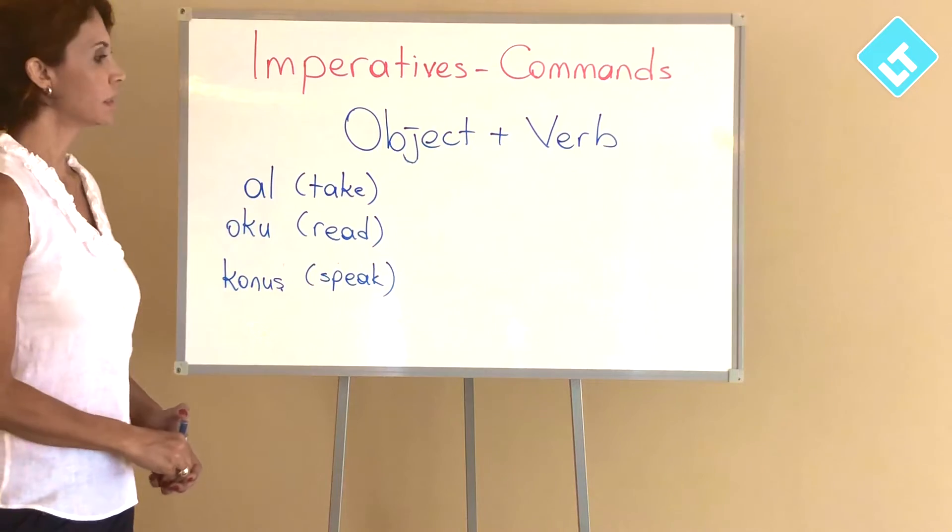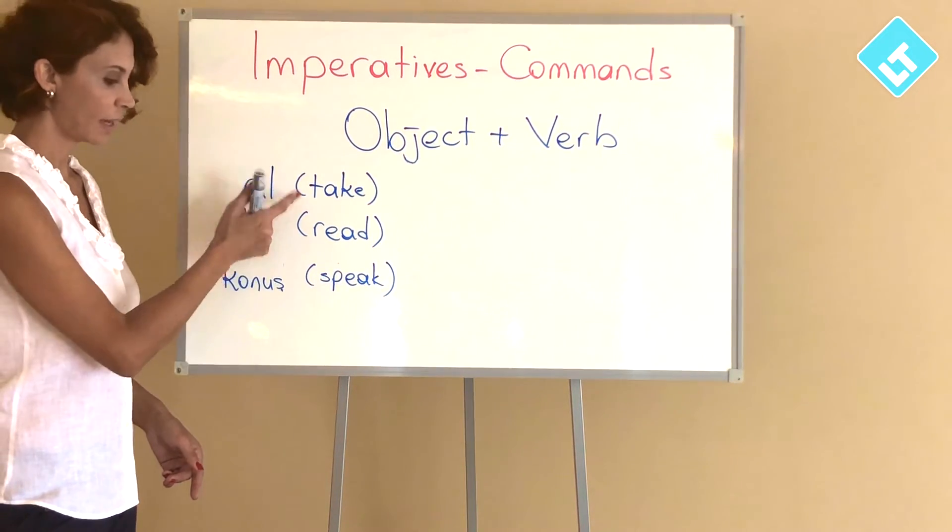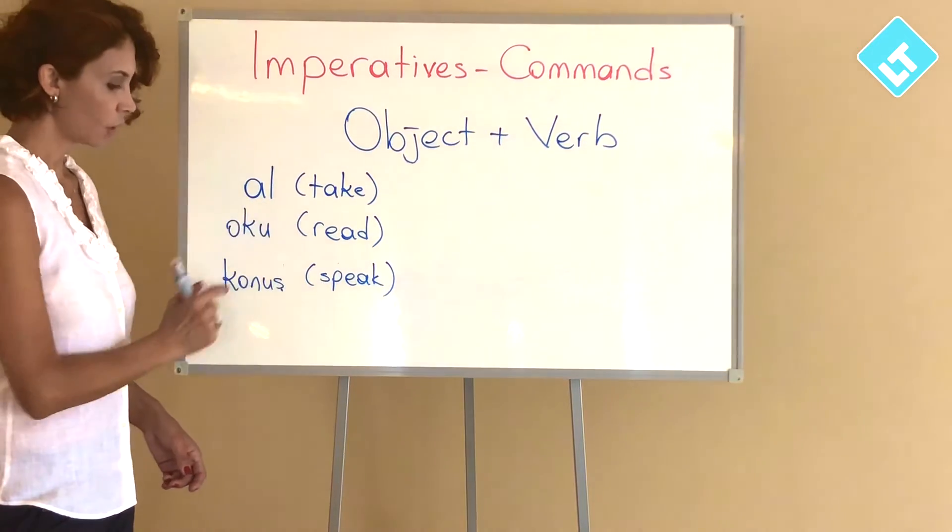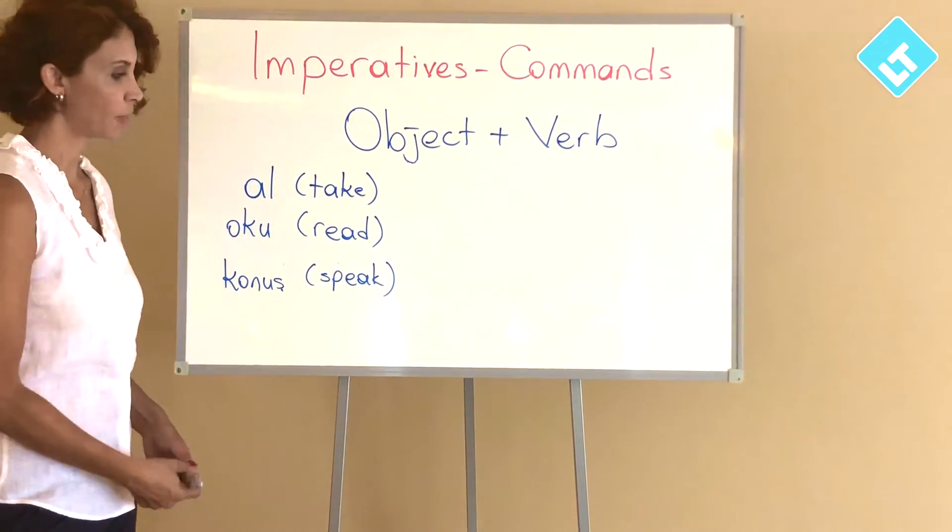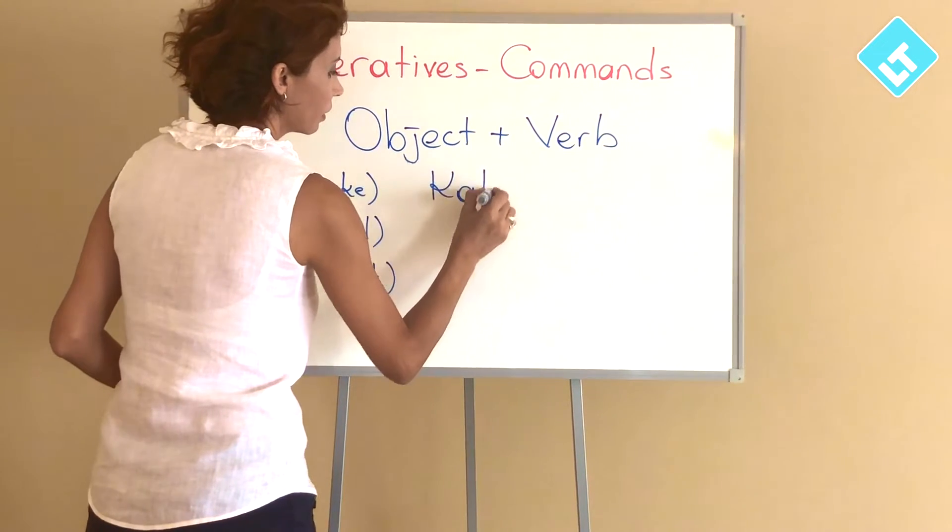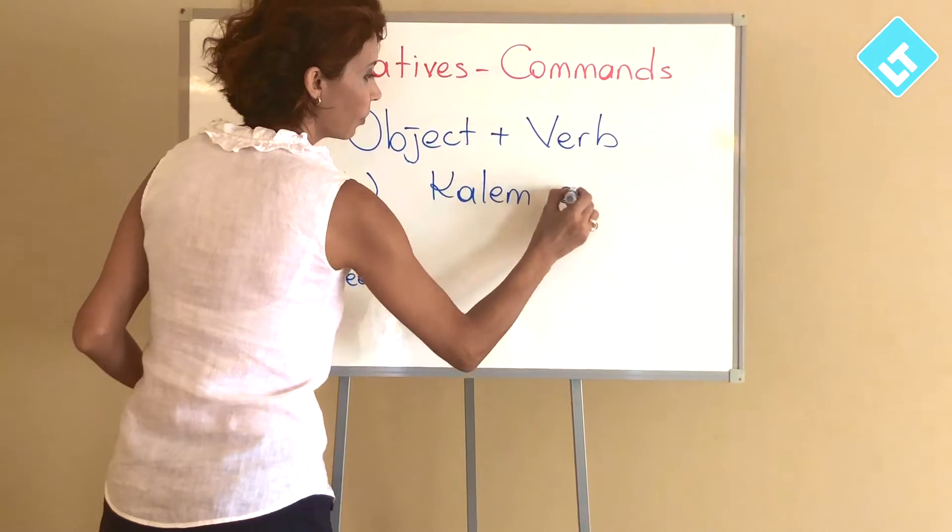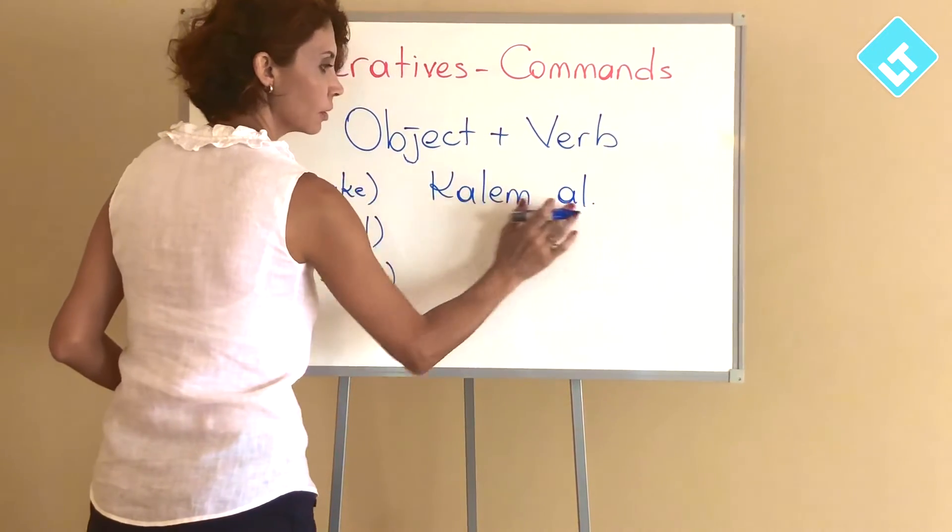Okay, let's see the examples. We have three verbs here. Al means take. Oku means read. Konuş means speak. I'm writing take the pencil or take a pen: Kalem al. Object, verb.